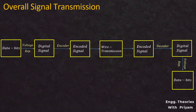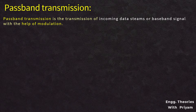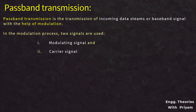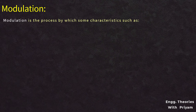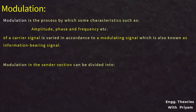Passband transmission is the transmission of incoming data streams or baseband signals with the help of modulation. Two signals are used in modulation: the modulating signal, which is the data stream or baseband signal represented by voltage levels or binary bits, and the carrier signal, which is a high-frequency sinusoidal signal. Modulation is defined as the process by which some characteristic — such as amplitude, phase, or frequency — of a carrier signal is varied in accordance with the modulating signal, also known as the information-bearing or message signal.